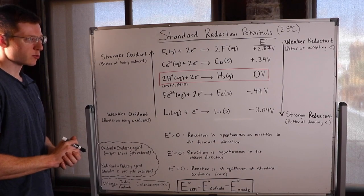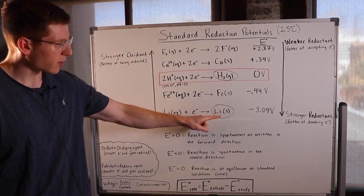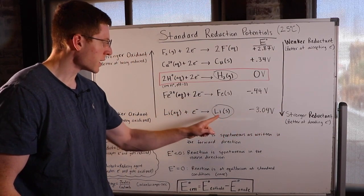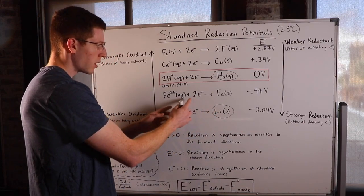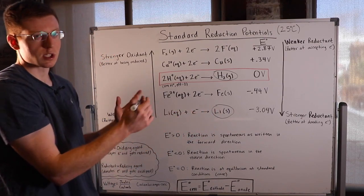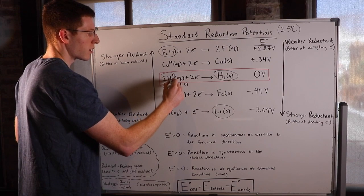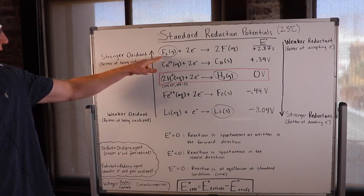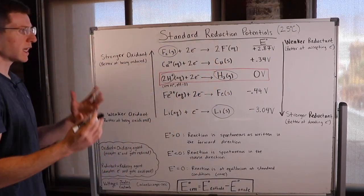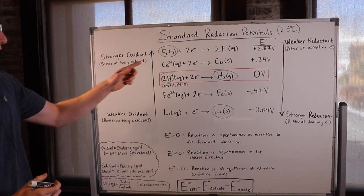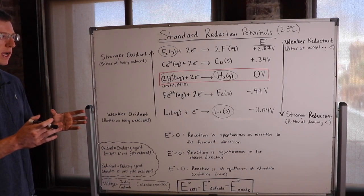Let's go through some practice questions. What's a better reductant — lithium solid or H2 gas? Lithium, of course, because as we go down the chart the reductants get stronger. Lithium's E naught is negative, so reduction is non-spontaneous in the forward direction but spontaneous in reverse — meaning lithium loves to donate electrons, become oxidized, and reduce something else. It's a strong reductant. What's a better oxidant — F2 gas or 2H+? F2, because of its positive E naught it is spontaneous in the forward direction. It loves to become reduced, gain electrons, and oxidize something else. It's taking electrons from something else so it can become reduced.